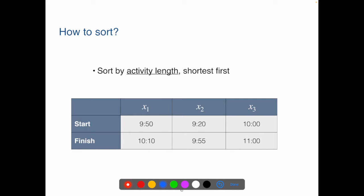Next, how about sorting by activity length with the shortest activity first. Then the greedy algorithm only chooses X1 for this example. But we know choosing X2 and X3 would also be possible and is a better solution. So this algorithm fails on this example as well. What about sorting by activity length, longest first. The algorithm would pick X1 and will not be able to choose any further activities. But we know we can choose X2 and X3, and that's a better solution. So this algorithm fails on this example.